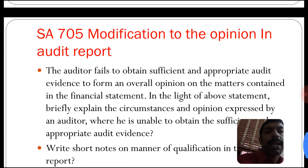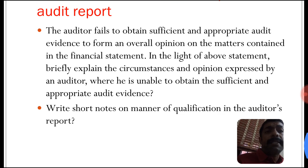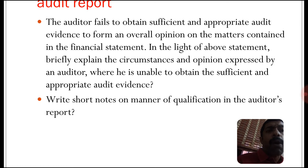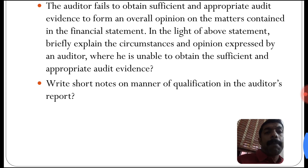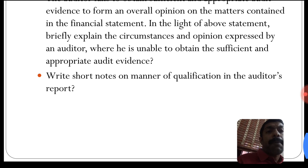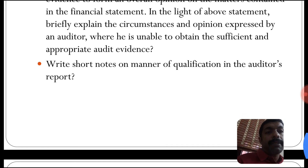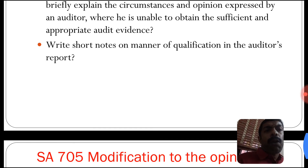SA 705 covers modifications to the opinion in the audit report. When the auditor fails to obtain sufficient and appropriate audit evidence to form an overall opinion on the matters contained in the financial statements, briefly explain the circumstances and the opinion expressed by the auditor where he is unable to obtain sufficient and appropriate audit evidence — this is known as a disclaimer of opinion. Write a note on the manner of qualification in the auditor's report.